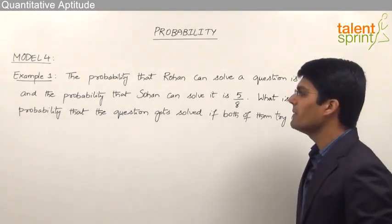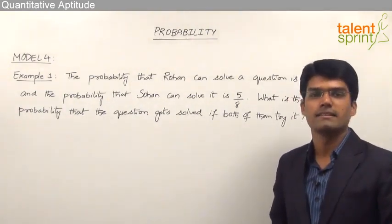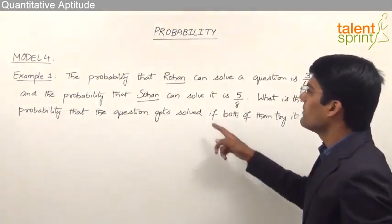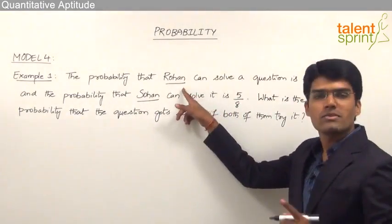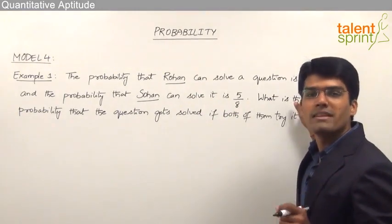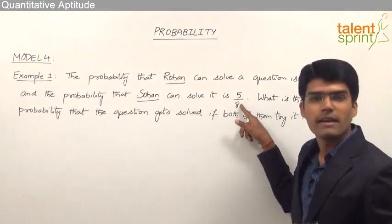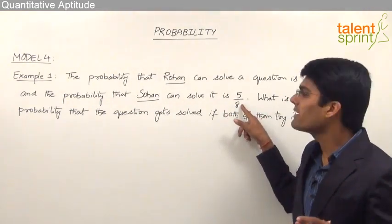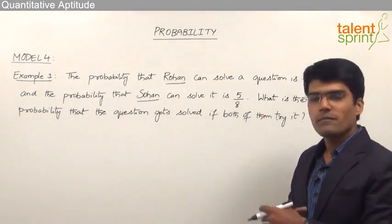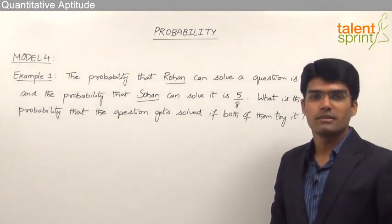What is the probability that the question gets solved if both of them try it? So here we have two persons, Rohan and Sohan. The probability that Rohan can solve a particular question is 3 by 4, and the probability that Sohan can solve it is 5 by 8. If both of them together try, what is the probability that the question gets solved?